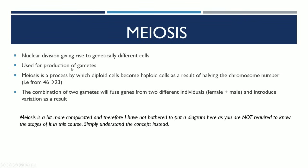That's the nuclear division giving rise to genetically different cells, mainly for the production of gametes - sperm cells and egg cells, which need to have 23. Basically it's a process by which diploid cells containing 46 become haploid cells by halving the chromosome number.